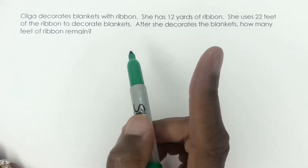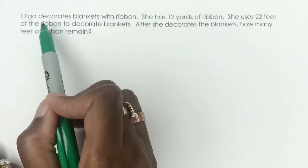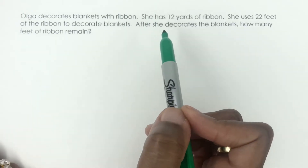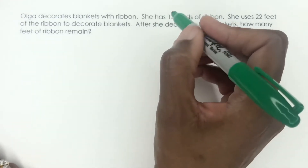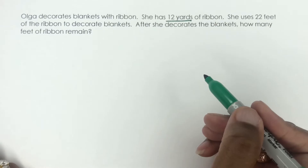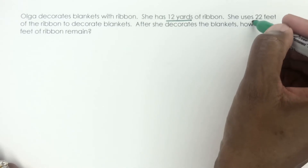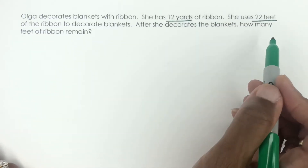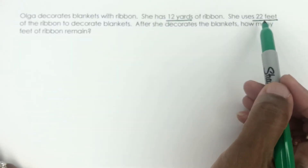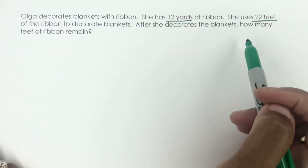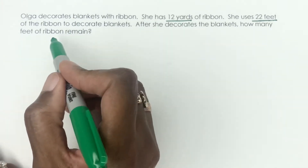Let's break it down one sentence at a time. 'Olga decorates blankets with ribbon' — is there any math to do here? No, so let's move on. 'She has 12 yards of ribbon' — okay, so here's our first piece of information: 12 yards. Next: 'she uses 22 feet of the ribbon.' Notice we have two different measurements — 12 yards and 22 feet. We need to get these into one measurement. The question asks how many feet remain, so that tells us the unit we need.